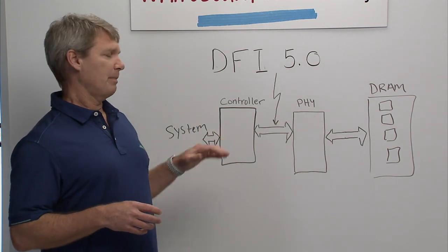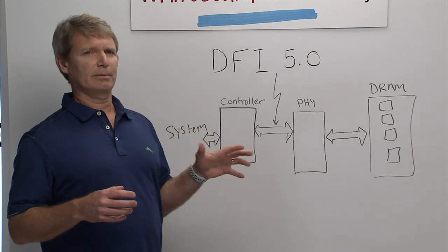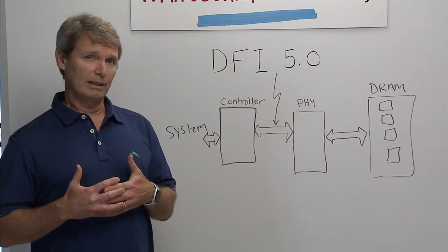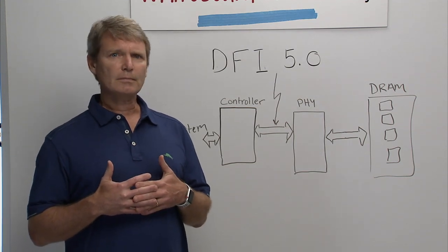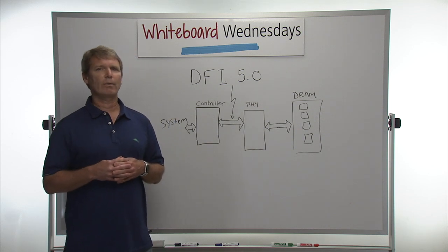So the memory controller is where the control functions reside. So this is where the system transactions come in and they're converted into DRAM protocol. It does things like opening and closing the pages on the DRAM.